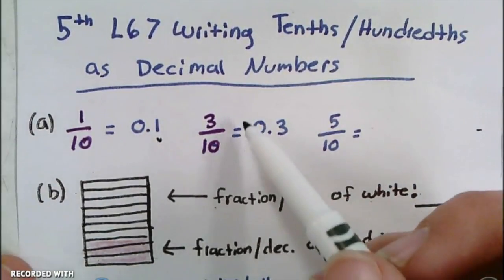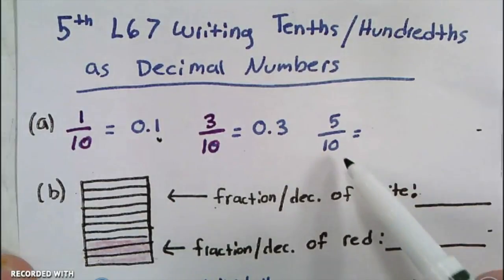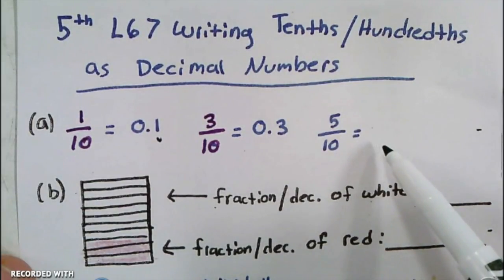Look for the trend here: we have 3/10 and that's written as 0.3. Here we have 5/10, and I want you to write that one as a decimal.